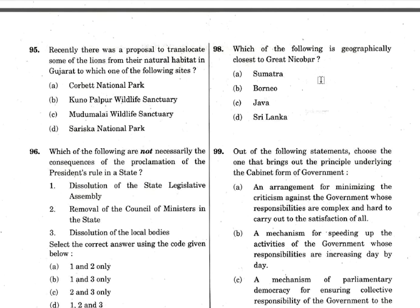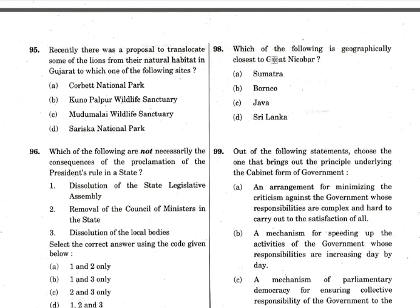Question 98 is a mapping question about which island is closest to Great Nicobar. Andaman and Nicobar Islands are actually far from the Indian mainland — closer to the Thailand or Indonesia area. So you can eliminate Sri Lanka. Indonesia's islands: Sumatra is on top, then Java, then Borneo further east. Sumatra is the closest to Great Nicobar. This is a tricky question that many aspirants would get wrong. Answer is Sumatra.